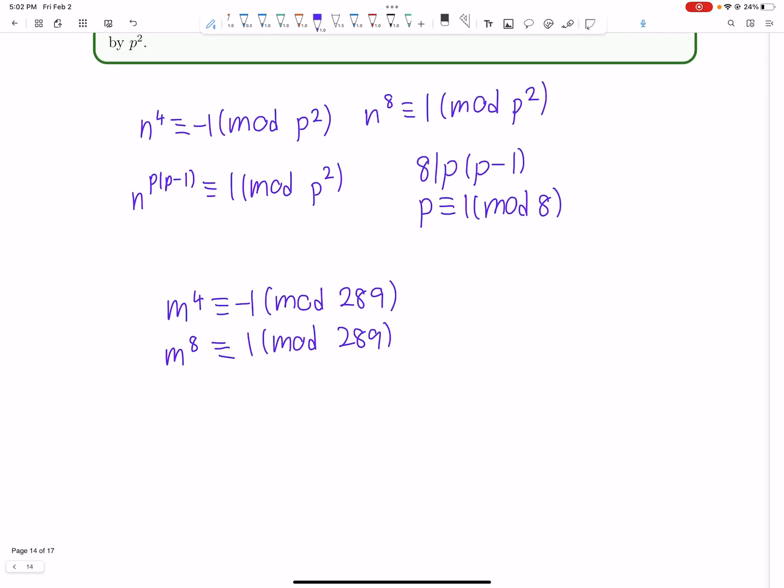So for what value will we have m to the 4th is negative 1 mod 17? Now this is kind of a little bit of an annoying calculation, but the idea is now we just look for when is, if m to the 4 is negative 1 mod 17, which you can write this as 16 as well, m squared has to be either 4 or negative 4, or 4 or 13 mod 17.